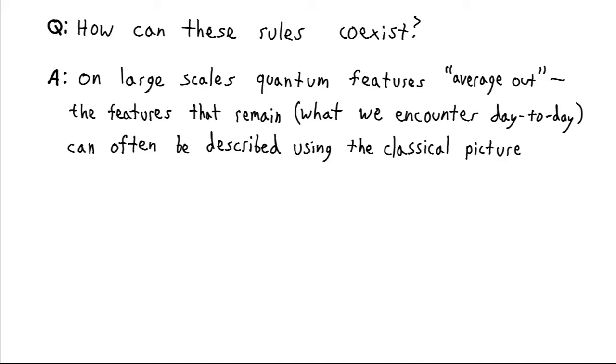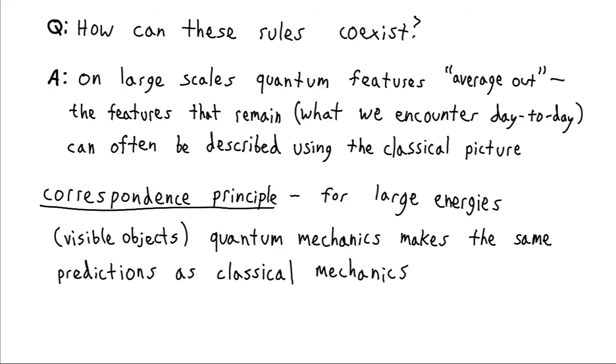Well, the answer is that on these larger scales, these very bizarre quantum features tend to average out. And so the features that remained don't get averaged out, those are the ones that we experience every day. And those particular features can often be described using the classical picture.